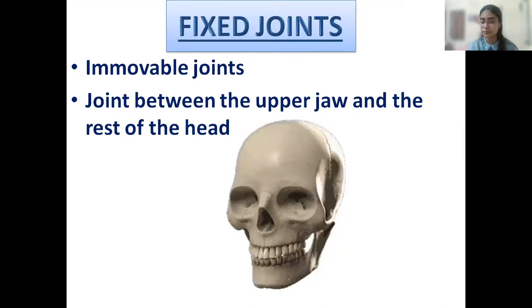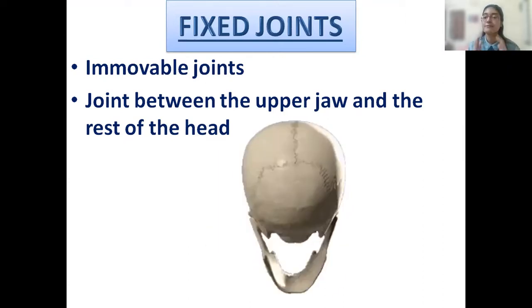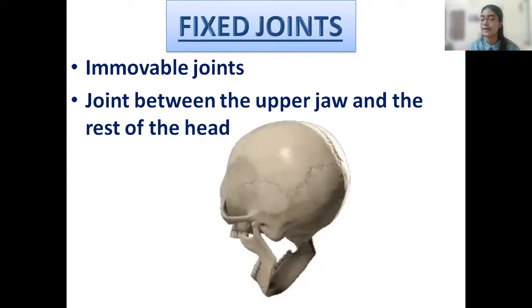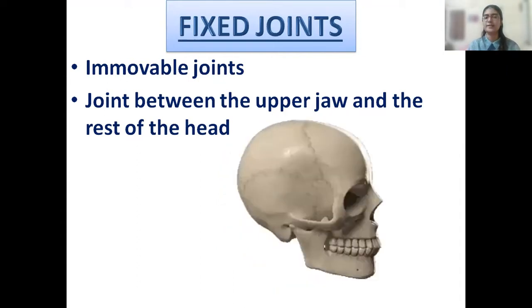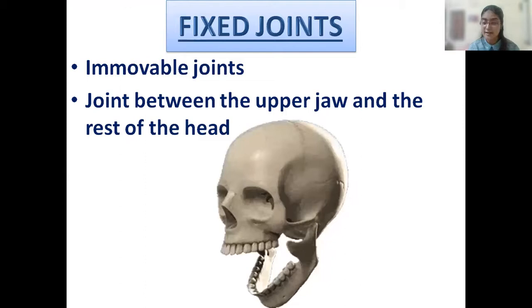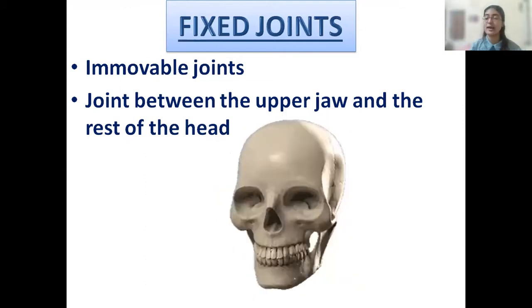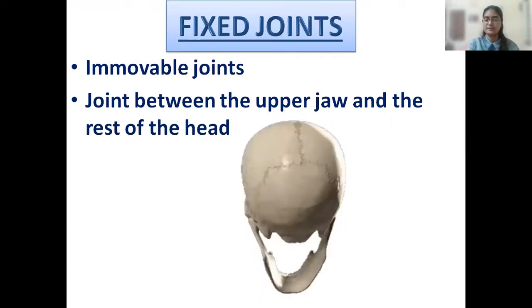Hence, they are fixed in a position. So, what can we also call them? Immovable joints. Very good. So, the joint between the upper jaw and the rest of the head is known as fixed joint. Perfect.